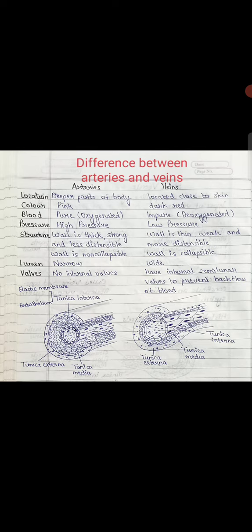Point number one: location. Arteries are located in deeper parts of the body, while veins are located close to the skin. You can see the upper part of the skin. What is the color?